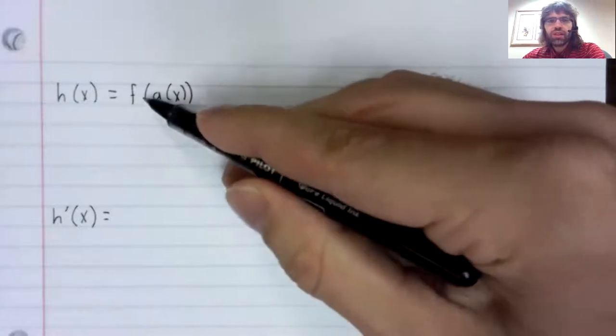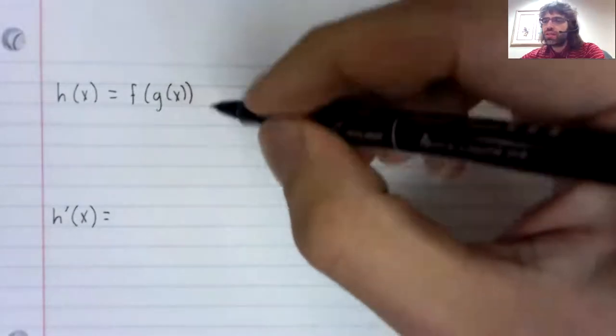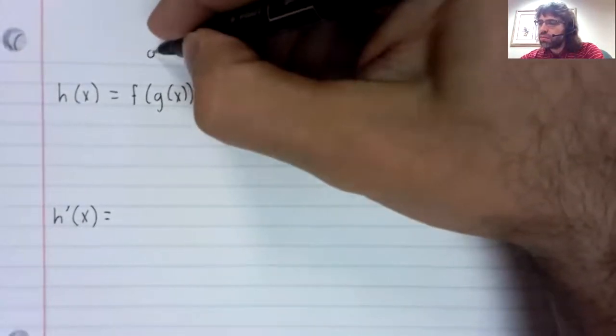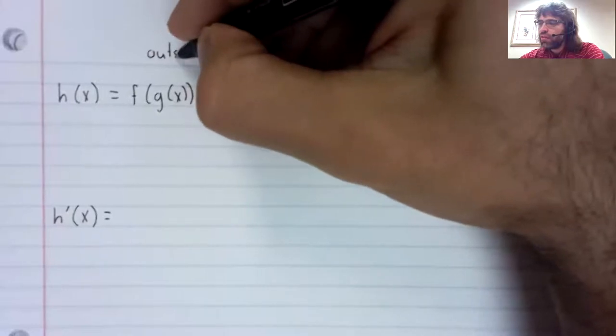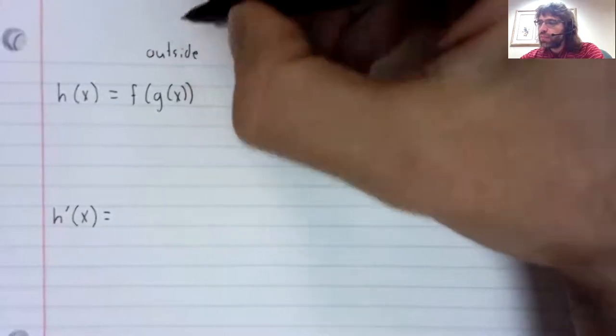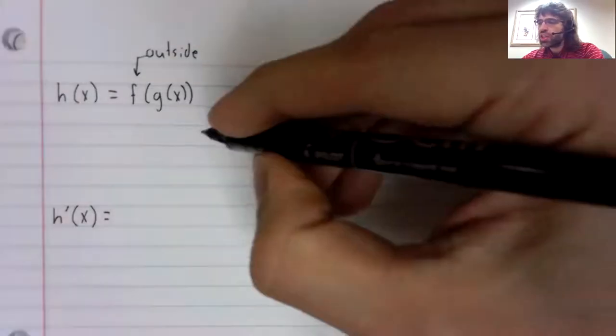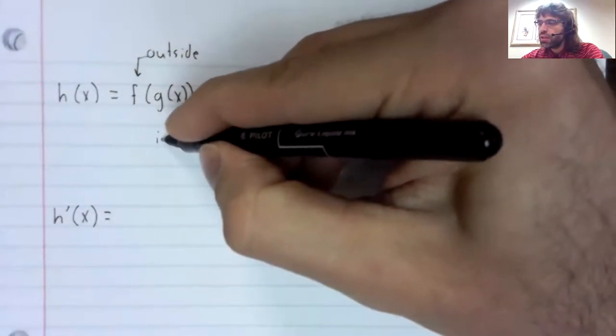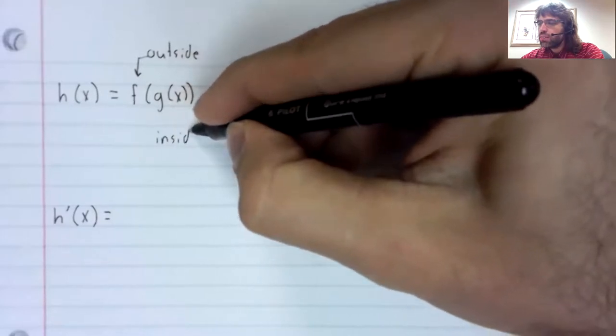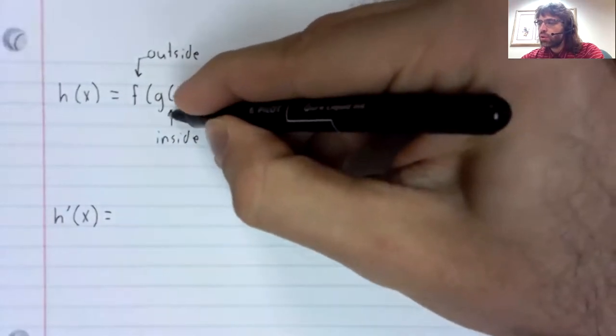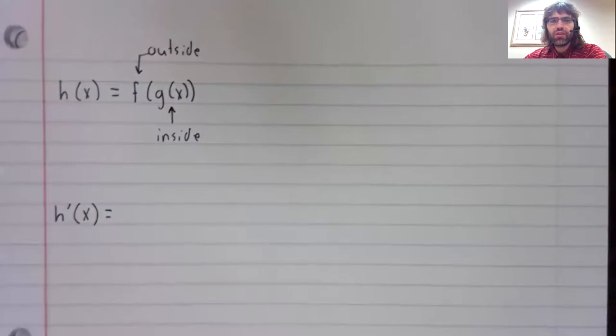Let's give these two functions names. F will be the outside function. G will be the inside function.